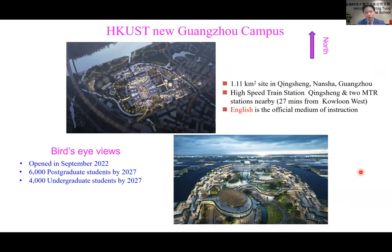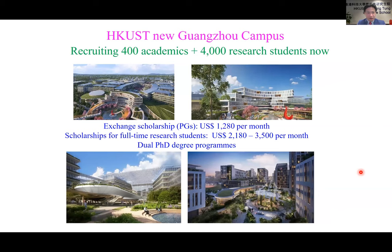We recently opened our new campus in Guangzhou, which is about twice the size of our Hong Kong campus, only about 30 minutes apart by high-speed rail. English is the official medium of instruction. We are actively recruiting 400 academics and 4,000 research students, offering exchange scholarships and full-time research scholarships. We also aim to establish new dual PhD programs — two years in our campus and two years at a partner university. If interested, please contact me at the email shown here.